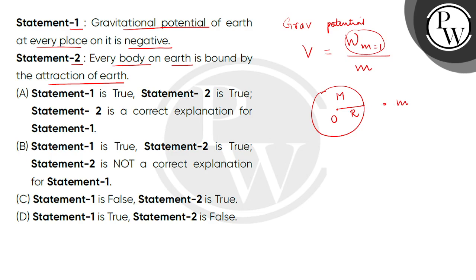We pull it towards the center of the earth, but we bring it from infinity against the direction of gravity to its present position. Therefore, we can say that the gravitational potential at every place will be negative because the direction is negative.